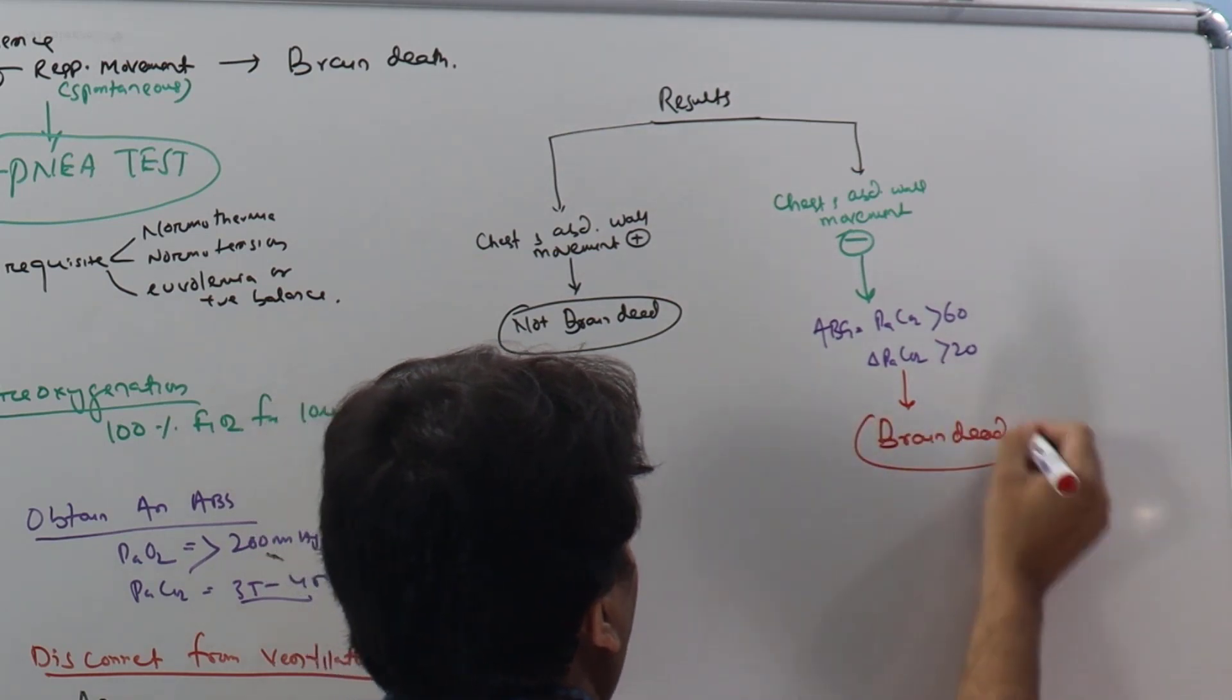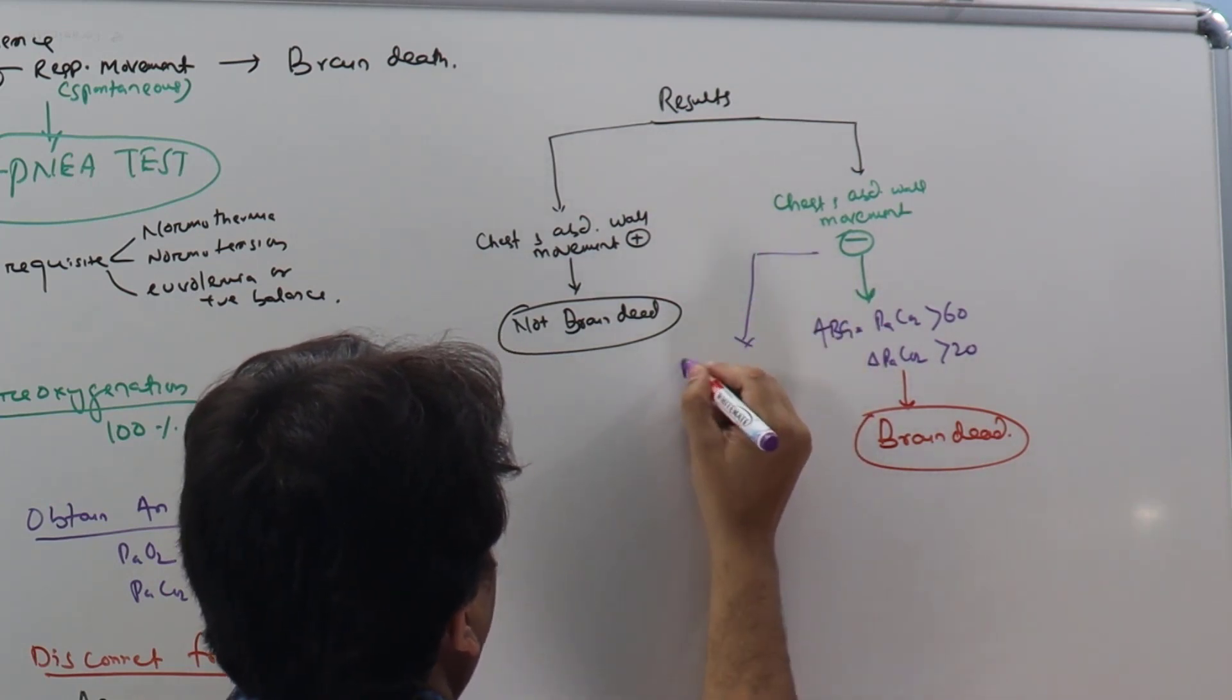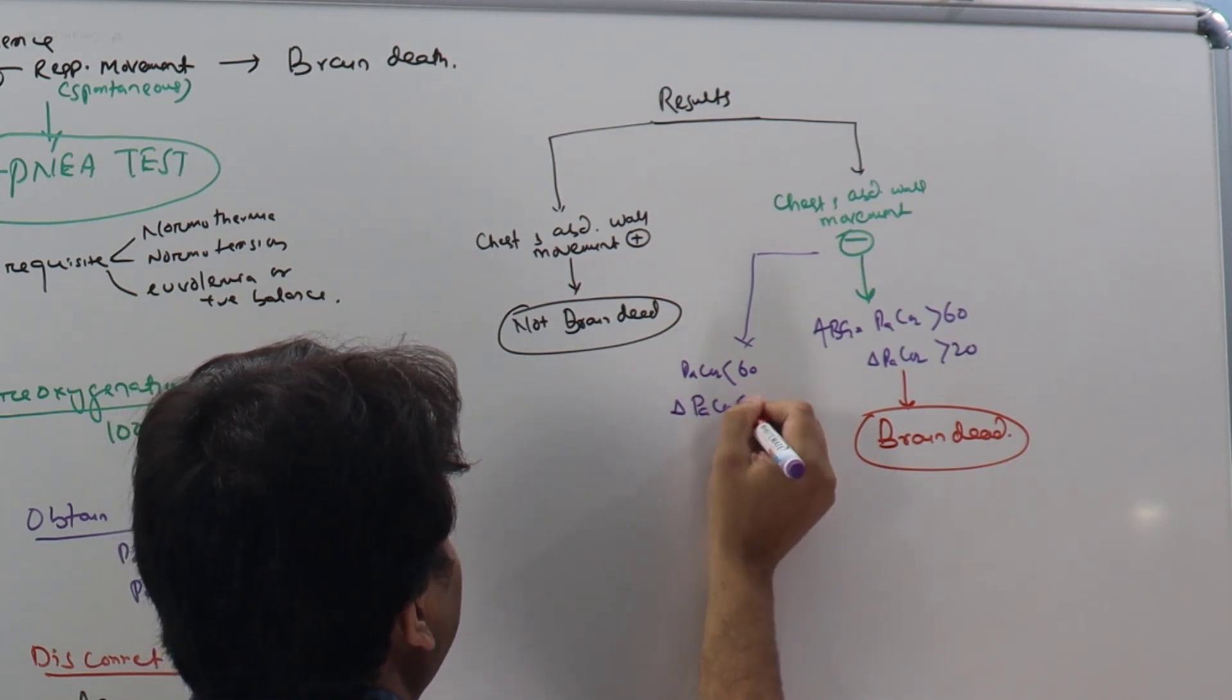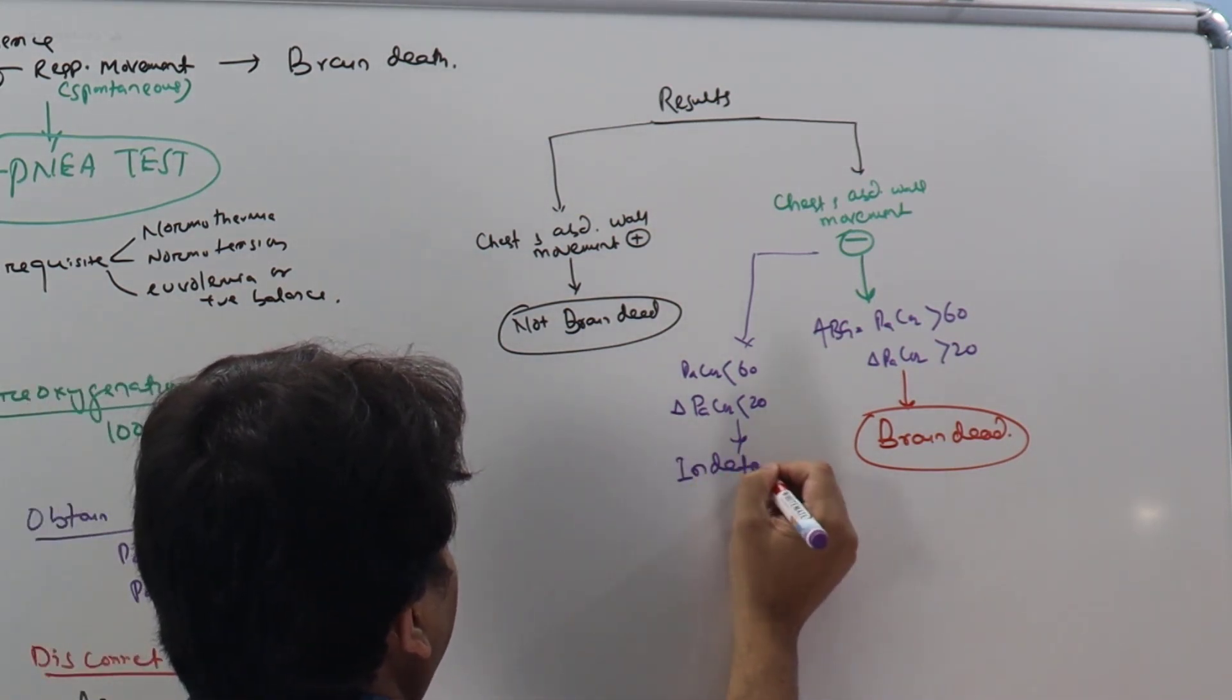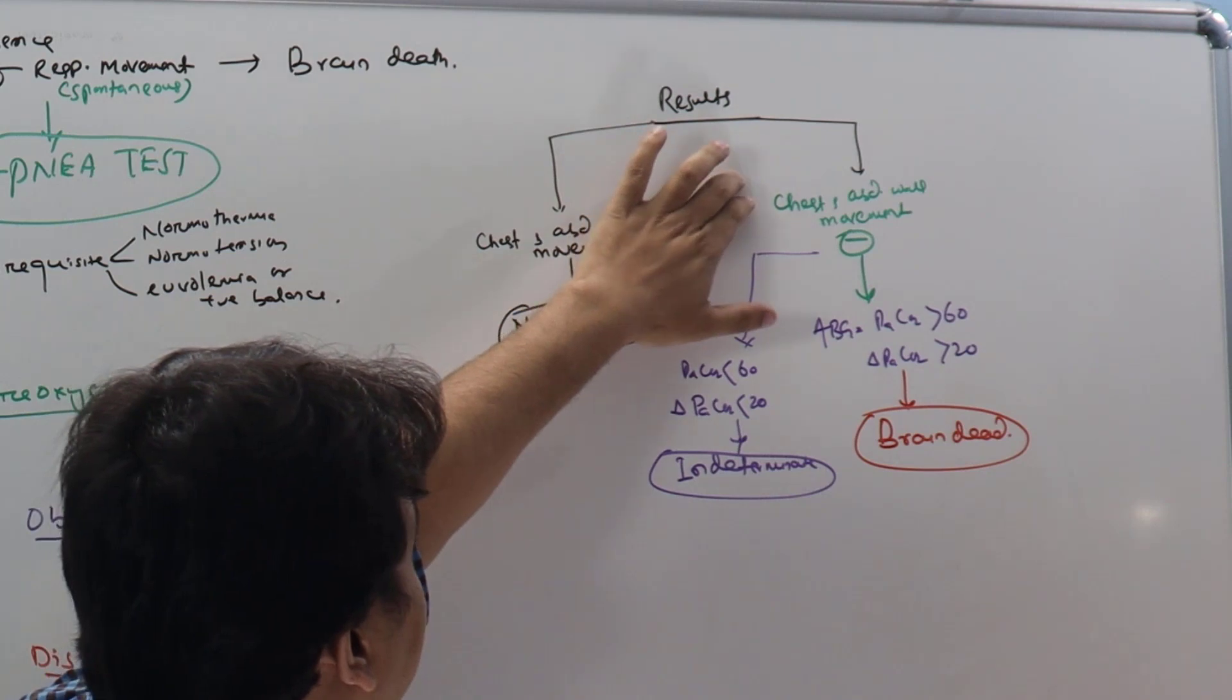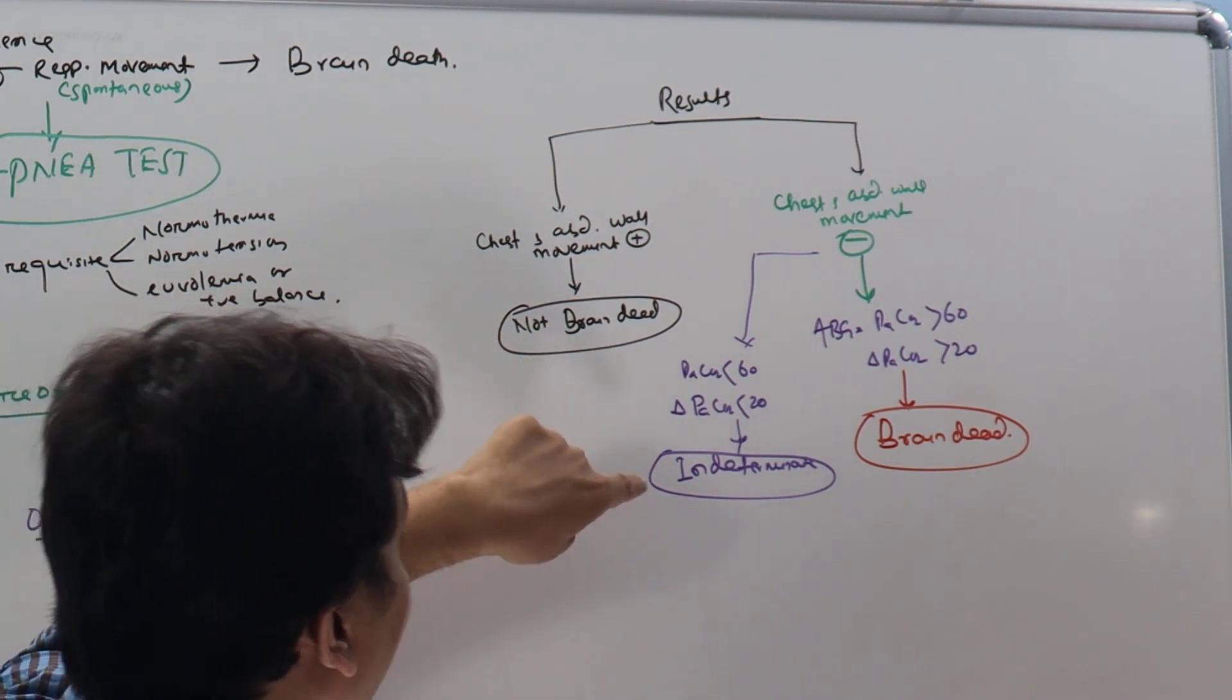There can be another result where PaCO2 is less than 60 and delta PaCO2 is less than 20, change is less than 20. In this case it will be called indeterminate. Indeterminate means there is no movement, but at the same time we have not provided an adequate stimulus to the patient or to the brainstem.